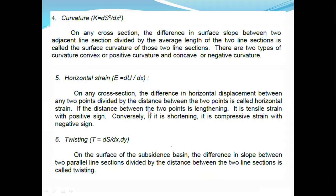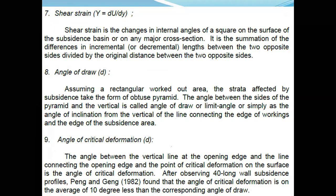Twist on the surface is the difference in slope between two parallel line sections divided by the distance between them. Shear strain refers to changes in internal angles of a surface square. Angle of draw: assuming a rectangular worked-out area, the strata affected by subsidence take the form of an obtuse pyramid, and the angle made by the sides of the pyramid with the vertical is called the angle of draw. Angle of break is also known as the angle of fracture.